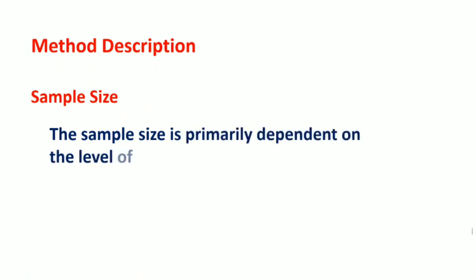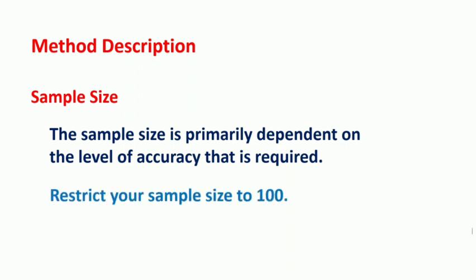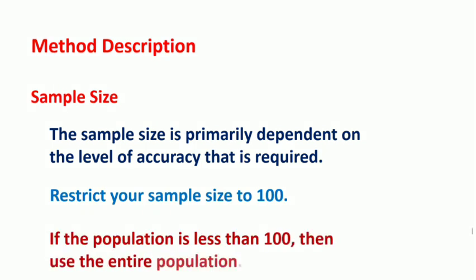Let us now look at the sampling size. The sample size is primarily dependent on the level of accuracy that is required. To give more details of this concept requires mathematics beyond the scope of this course. However, one rule of thumb can be given is that you restrict your sample size to 100. That is to say, whatever your population size is, try to restrict your sample size to 100. If the population is less than 100, then use the entire population.